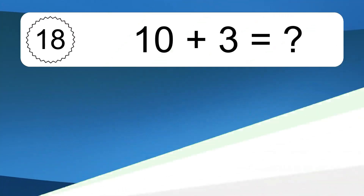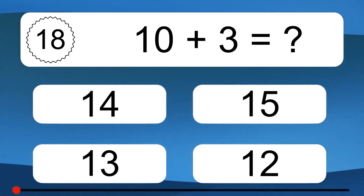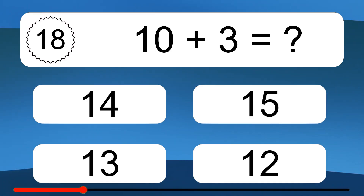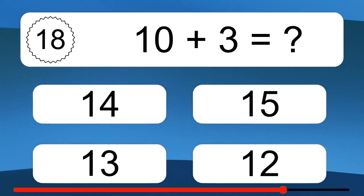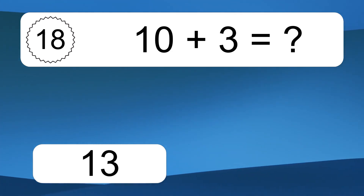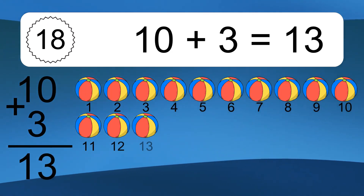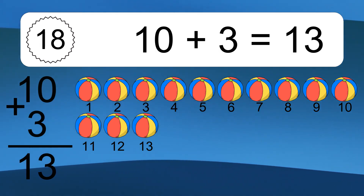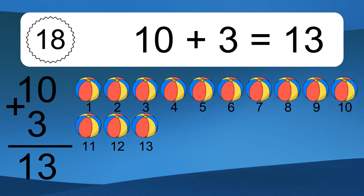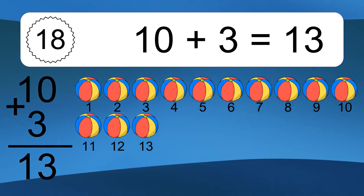10 plus 3 equals 13. Let's count it. 1, 2, 3, 4, 5, 6, 7, 8, 9, 10, 11, 12, 13.